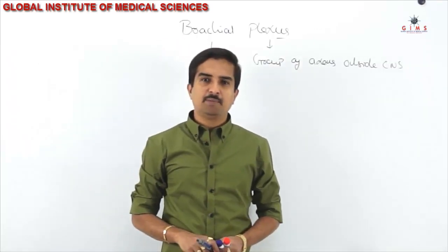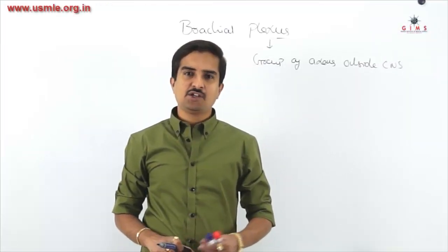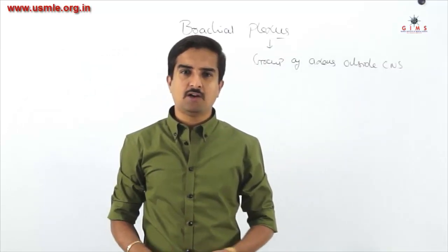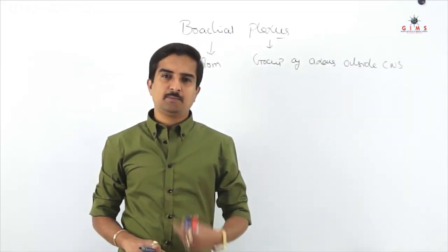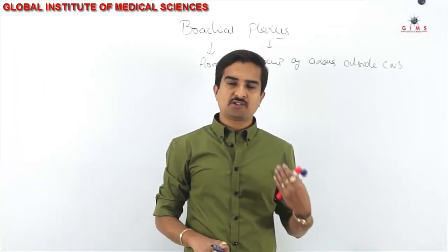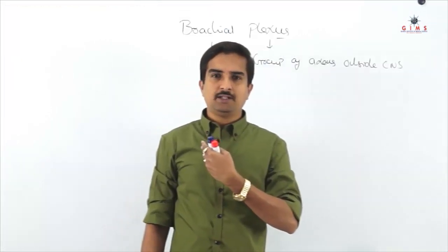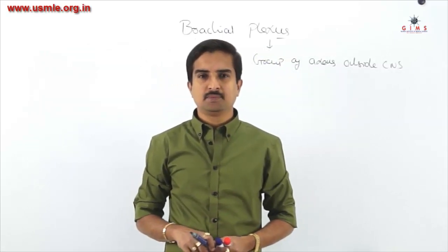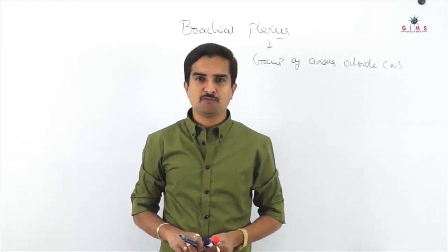The branches arising from the brachial plexus give innervation to the anterior and posterior compartments of the entire upper limb. After they form, they pass laterally from the neck and through the axilla into the arm. Let us now study about the formation of the brachial plexus.